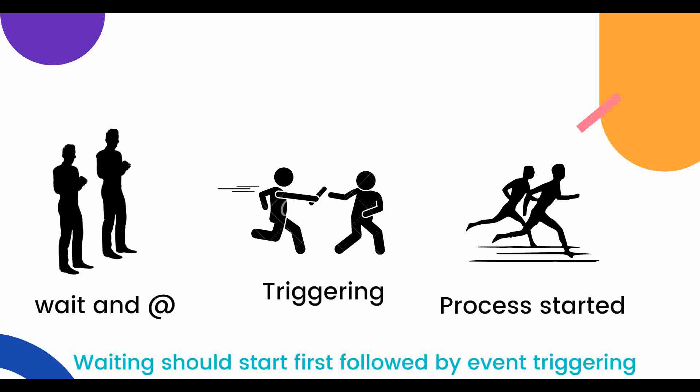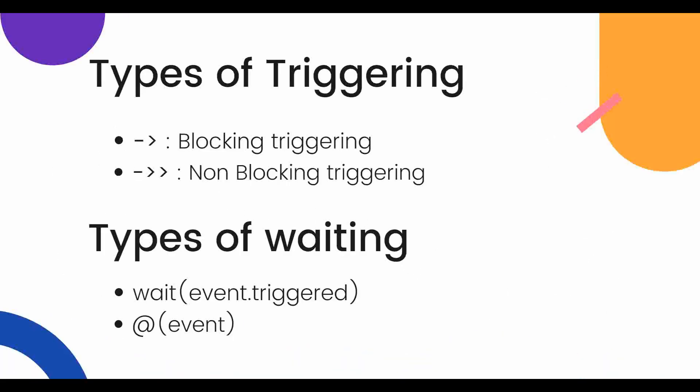The golden rule of events is: waiting should start first, followed by the event triggering. In the relay race analogy, if the guy waiting was not in his position, the other guy coming to give the flag wouldn't find anyone. Similarly, if the wait process does not start first and the triggering happens, the wait process cannot catch the event triggering, so the process will get blocked.